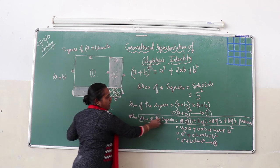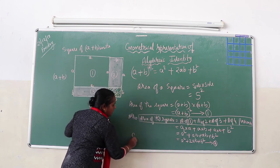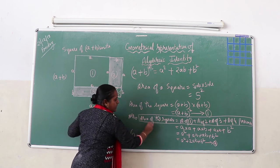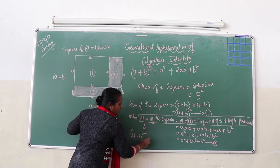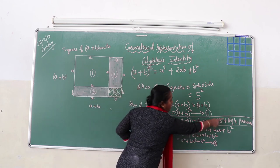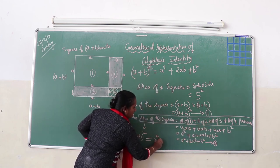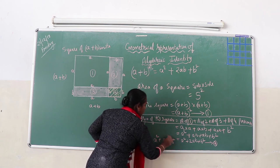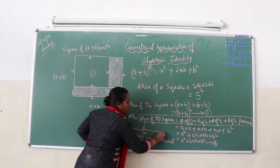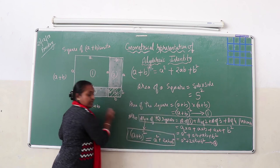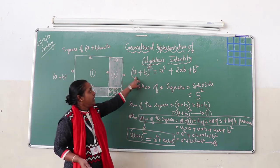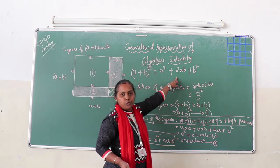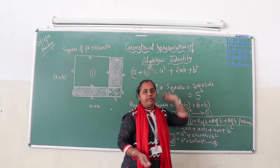Substituting equations 1 and 2, the area of the square from equation 1 is (a plus b) whole squared, and this is equal to A squared plus 2AB plus B squared. This is how we prove the geometrical identity: (a plus b) whole squared equals A squared plus 2AB plus B squared. Thank you.